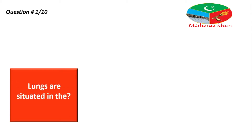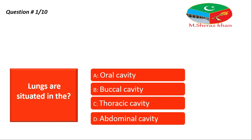Bismillahirrahmanirrahim. Question number one: lungs are situated in the — option A is oral cavity, option B is buccal cavity, option C is thoracic cavity, and option D is abdominal cavity. Lungs aapke paas kahan situated hai? This is your question. I give you 10 seconds and then I tell you what is the right answer.